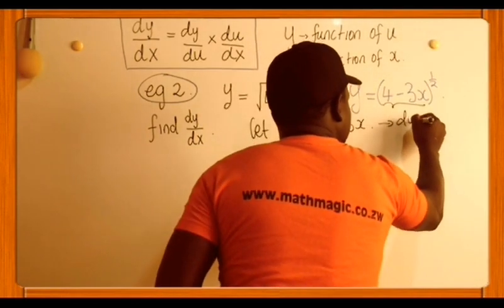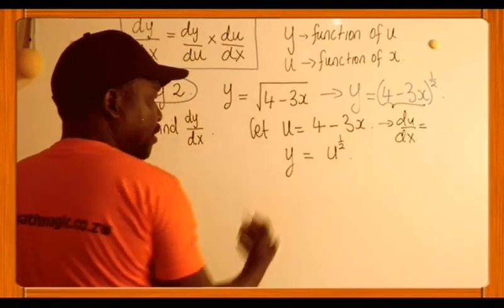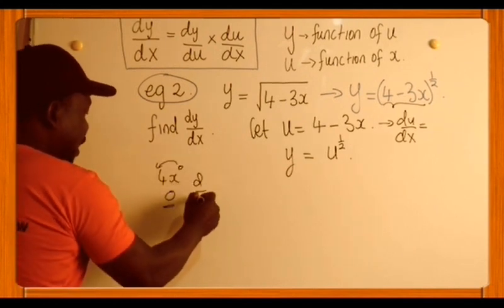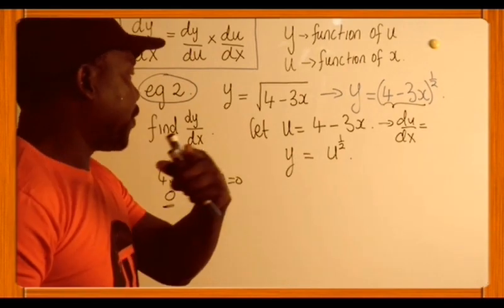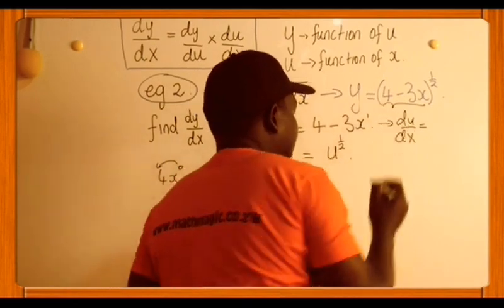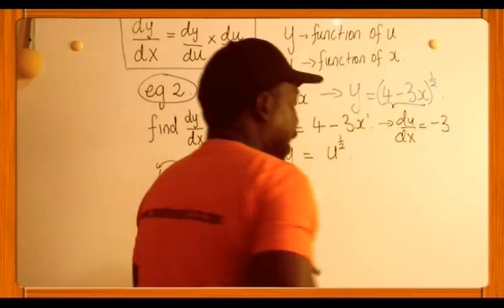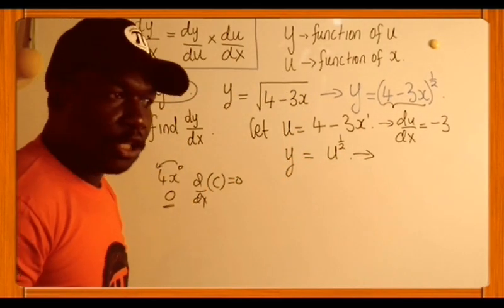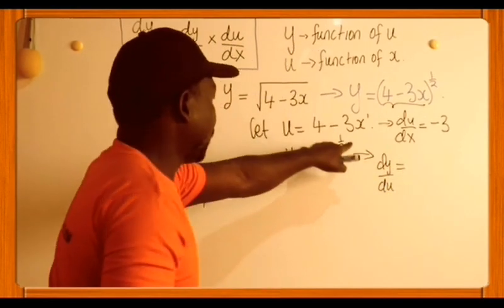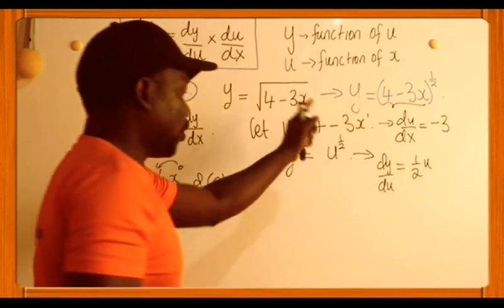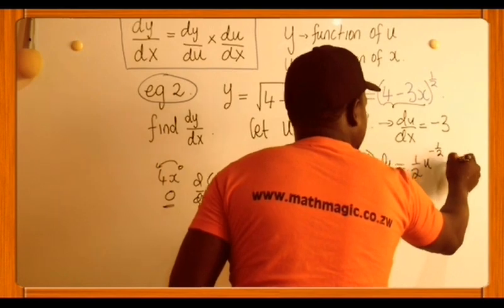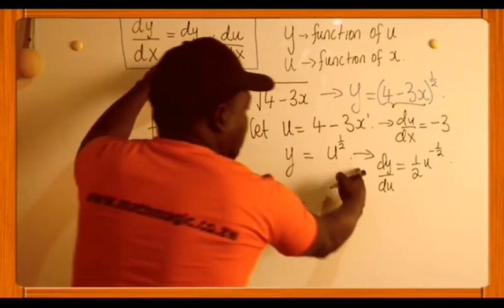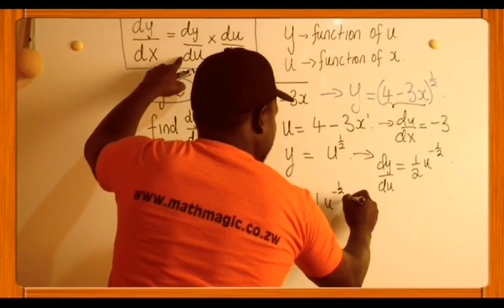We require du/dx and dy/du. From u equals 4 minus 3x, we get du/dx. Differentiating a constant gives 0, so differentiating 4 gives 0. The power of 1 on x applies, giving minus 3 times x to the 0, which is 1. So du/dx equals minus 3. From y equals u to the half, we get dy/du: the half comes down, so it's half times u to the power of negative half.